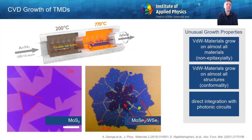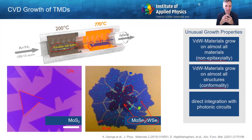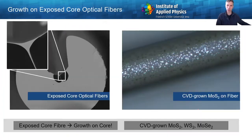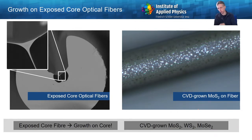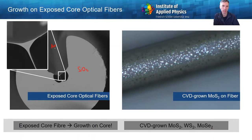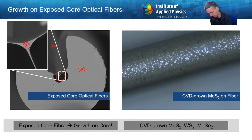What's maybe even more profound is that you can grow them on non-planar structures — they grow both non-epitaxially and conformally — and therefore this approach lends itself very nicely to direct integration with photonic circuits. The simplest photonic circuit you can think about is an optical fiber, so this is exactly what we did. We took a special kind of optical fiber, shown on the left hand side in cross-section: the gray area is silicon dioxide — glass — and all the dark areas are air. The photonically interesting part happens in the center, where you have a guiding core made of silicon dioxide with an optical mode that propagates in this core surrounded by air.